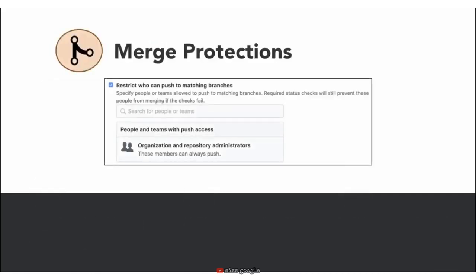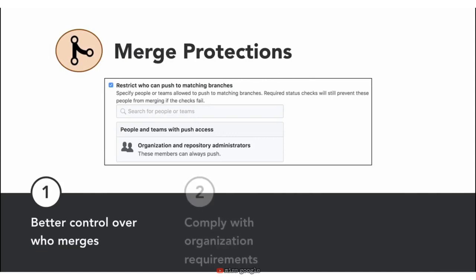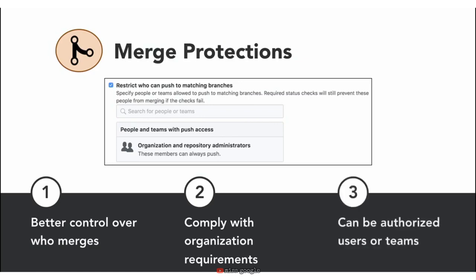Another branch protection I've seen in several development teams is where only specific individuals — maybe team leads — can merge a pull request into master. I've seen this on teams where audit purposes or organization requirements only allow certain individuals or teams to push to the production branch. So even if that pull request has been approved and everything is ready, only authorized individuals can merge that protected branch into master.